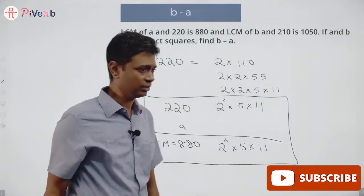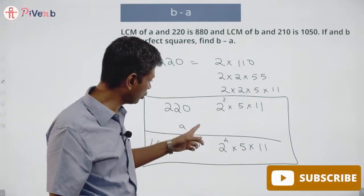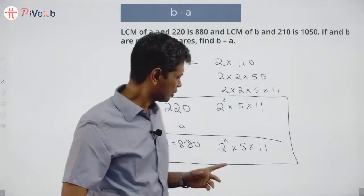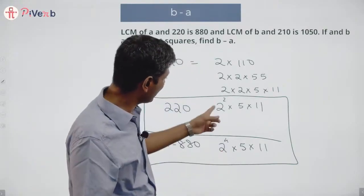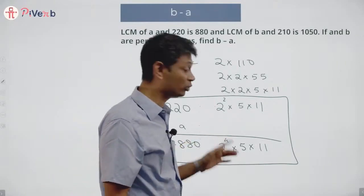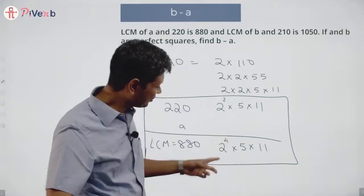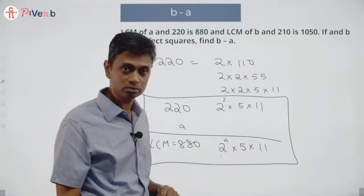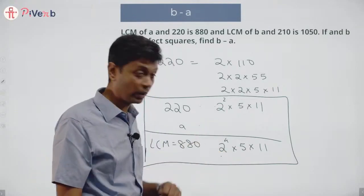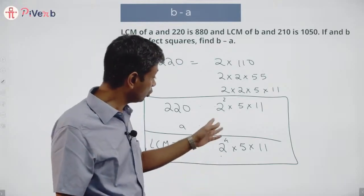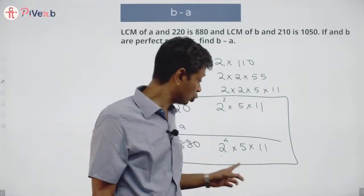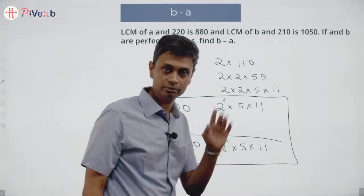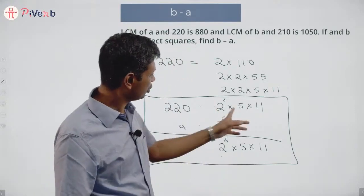The LCM must be a multiple of both 220 and a — it should be the smallest such number. The LCM has 2⁴. Since 220 has only 2², if a also had only 2², the LCM would only have 2². So a definitely must have 2⁴.